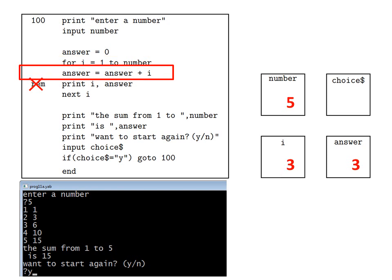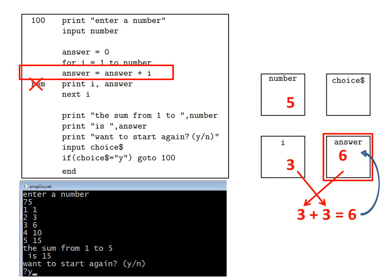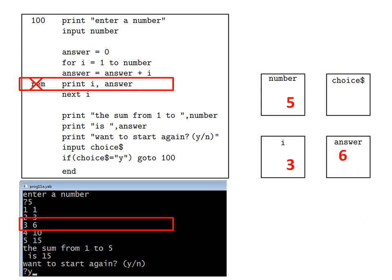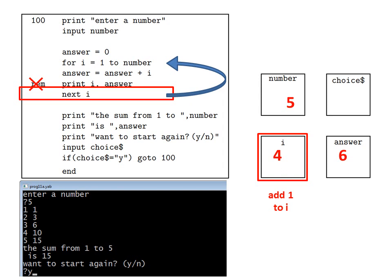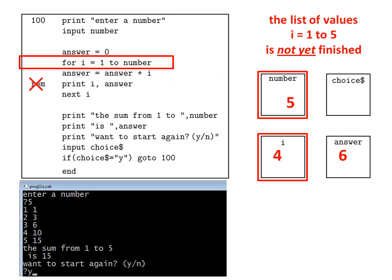So answer equals answer plus i, three plus three is six, and the memory location answer is updated to six. Then the diagnostic line prints to the black screen the current contents of i and answer. Then next i, so the value of i increases by one. To see if we need to jump back: i should be one to five, and since four does not yet exceed five, the computer does jump back.